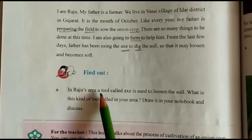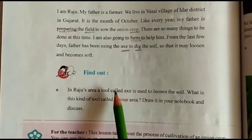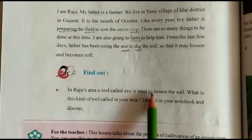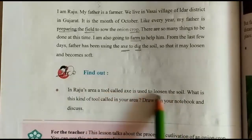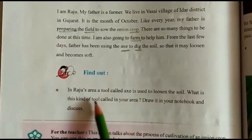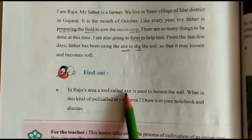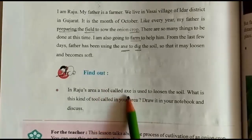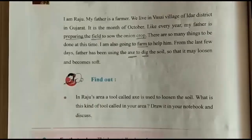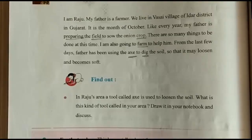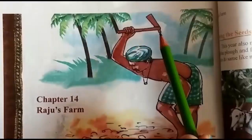In Raju's area, a tool called axe is used to loosen the soil. What is this kind of tool called in your area? Draw it in your notebook and discuss it. We also call it axe or kodali. In Hindi we say kodali; in English, axe or pickaxe. This is what it looks like.